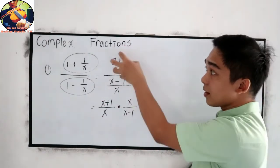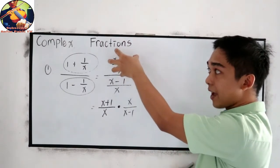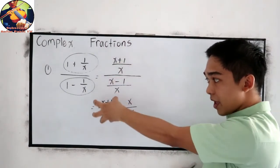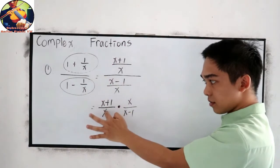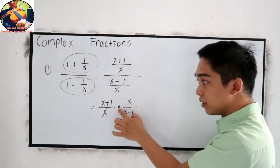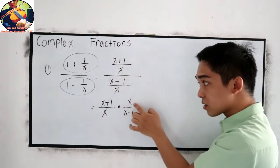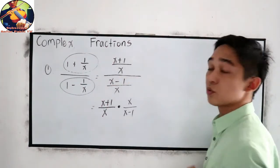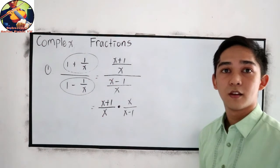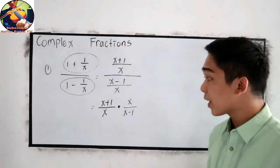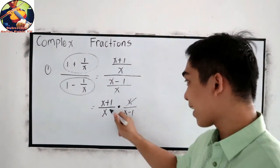Again, let us repeat. Copy our numerator, x plus 1 over x. x plus 1 over x. Proceed to multiplication. Then reciprocal our denominator, x over x minus 1. And now, we can cancel x and x.